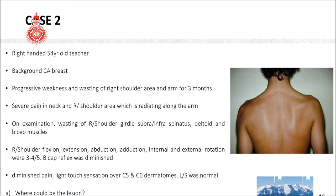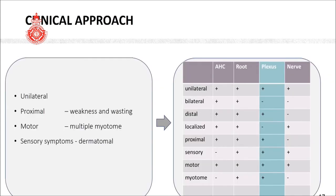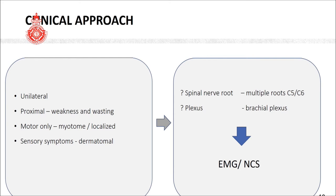Where could the lesion be? Summarizing the findings: it is a unilateral problem involving proximal muscle groups of the shoulder girdle area with both weakness and wasting. The motor weakness is not in a single myotome — it involves C5 and C6. Sensory symptoms are also confined to C5 and C6 dermatomal regions. So if it is a multiple myotome and multiple dermatomal problem, you have to think of either multiple root involvement or plexus involvement. In this area, the brachial plexus is involved — most likely diagnosis is brachial plexus injury, possibly due to radiotherapy.